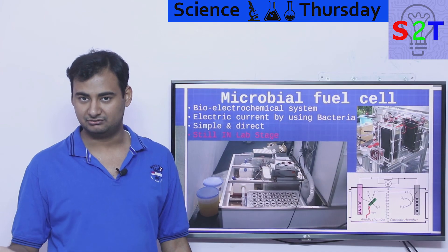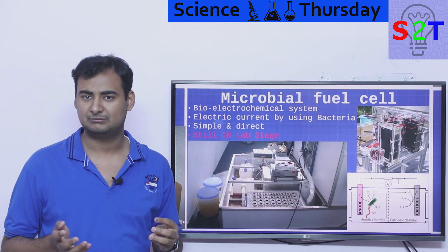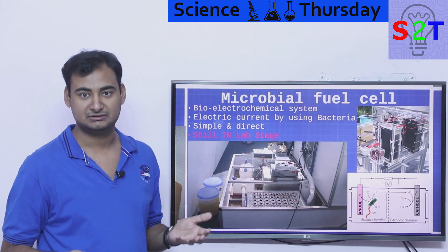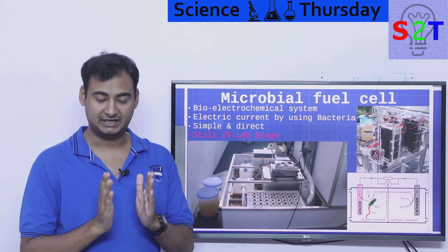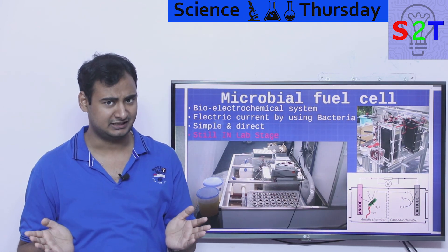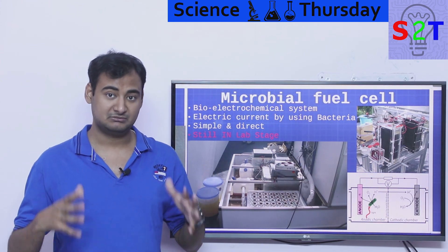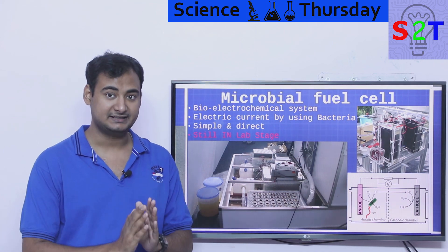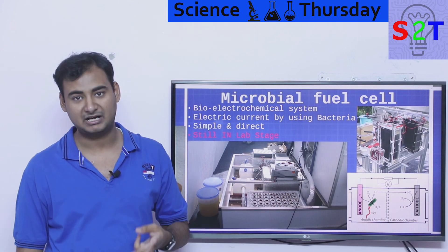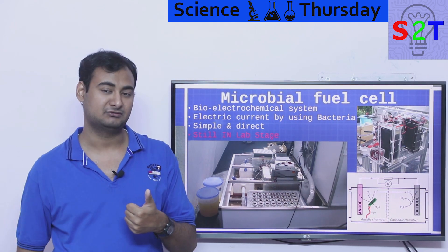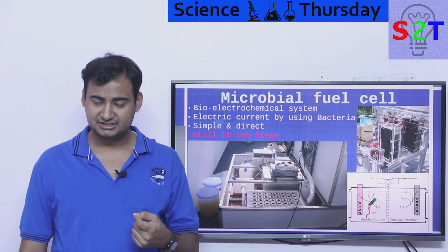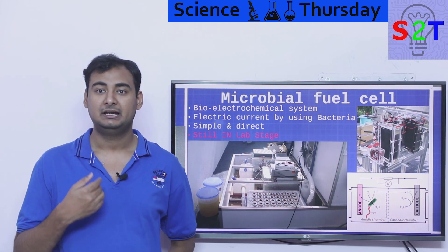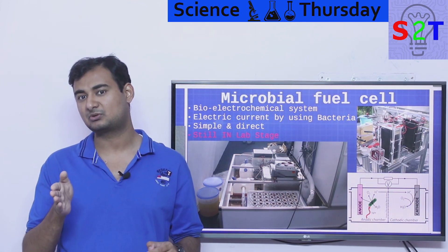The second way to convert sewage into electricity is the microbial fuel cell. You may have heard of Bill Gates' moonshot projects — one of them involves using urine as a fuel source for a generator. There are three primary types of fuel cells: hydrogen-based fuel cells, which are old technology; hydrocarbon fuel cells, which can run on methane and therefore work directly in biodigester plants; and the microbial fuel cell, which works differently.